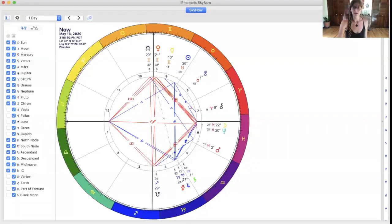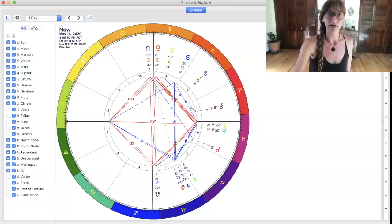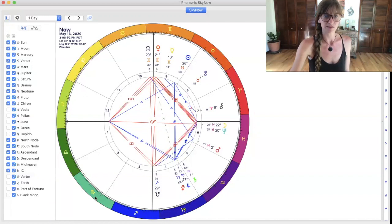So what I'm going to do here is I'm actually going to share my screen with you. What we are looking at here is the zodiacal wheel. This right here, this is the zodiac. This is a symbol for Cancer, Leo, Virgo, Libra, Scorpio, Sagittarius, Capricorn, Aquarius, Pisces, Aries, Taurus, and Gemini.